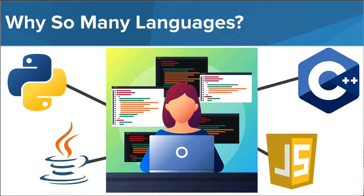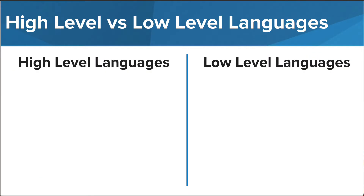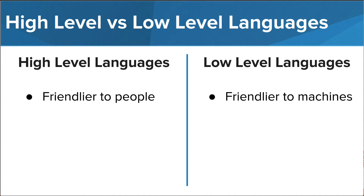Each language differs from others in many ways, but one thing most of the widely used programming languages of today have in common is that they are considered high-level languages. A computer programming language usually fits into the category of high-level or low-level. In general, high-level languages are easier for people to understand. They use syntax, or language, closer to the way we have learned to communicate with one another and, in turn, make it easier to read and write programs.